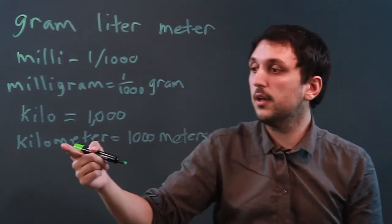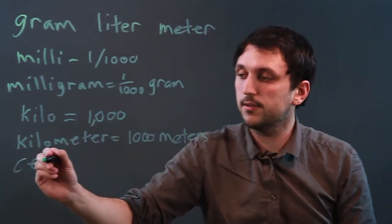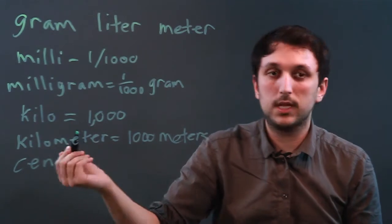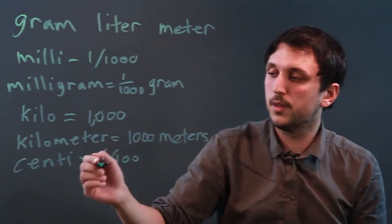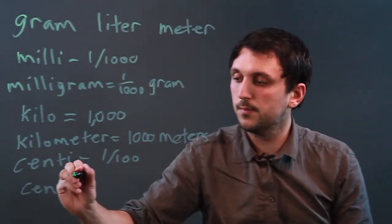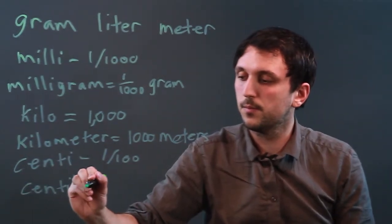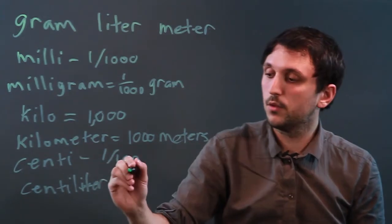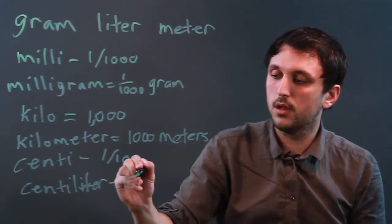And then the last one that we use a lot is centi, which means one one hundredth. So if we see centiliter, it means one one hundredth of a liter.